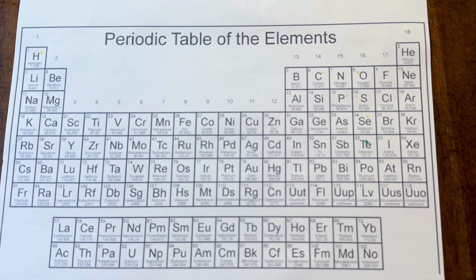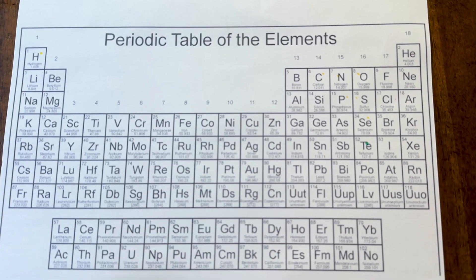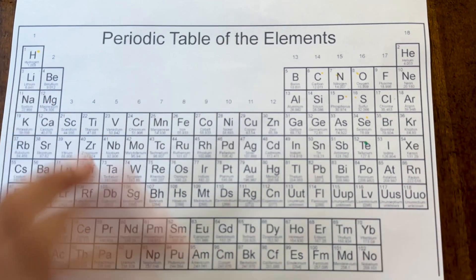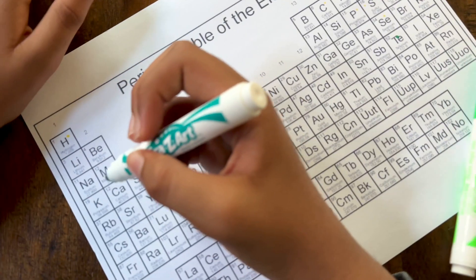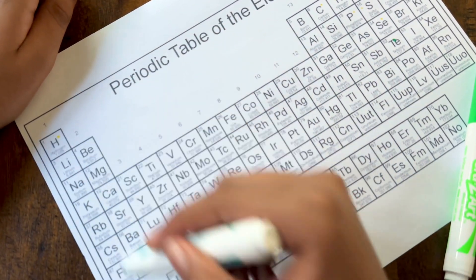We're going to be looking at how it classifies and the definition of each classification. First, these are alkali metals.